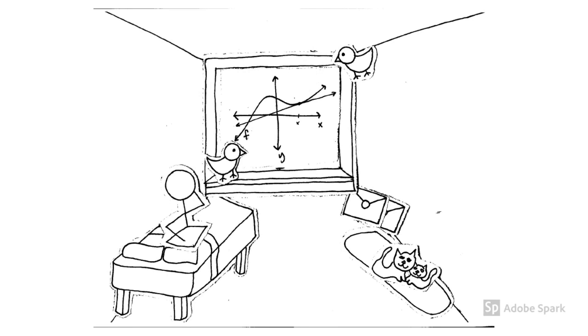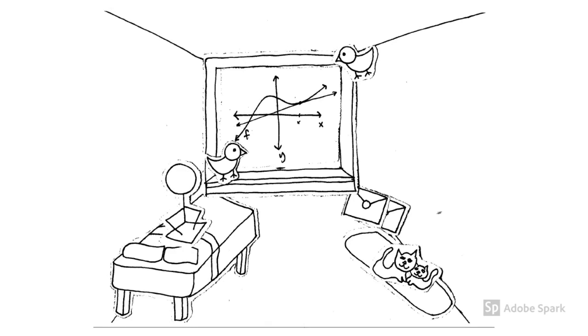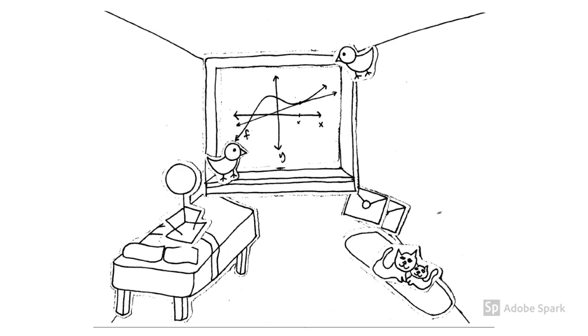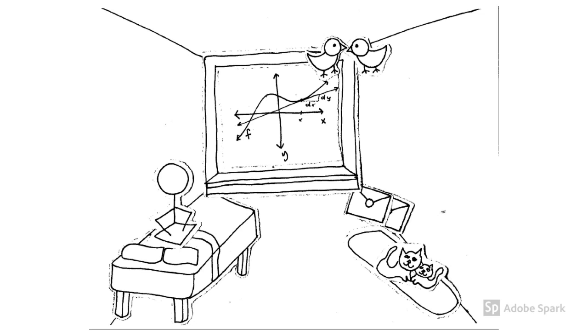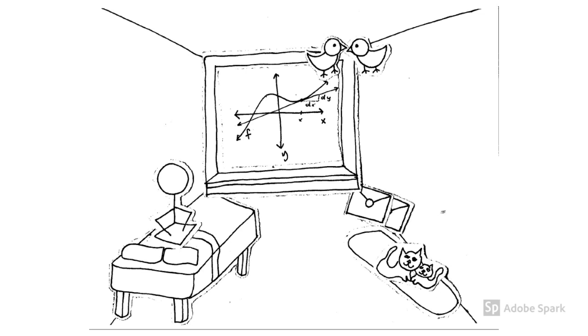This is the tangent line at x. The differential is how high I might fly from right now. Tweet tweet. But actually I might go a lot higher. Tweet tweet.